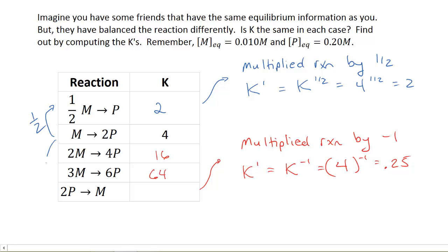Finally, if we go here, we have multiplied this reaction by minus 1. When you reverse a reaction, which is what happened here - we've gone from M → 2P to 2P → M - that's multiplying by minus 1, and we get 4 to the minus 1, which is 0.25. And voila, we're finished.